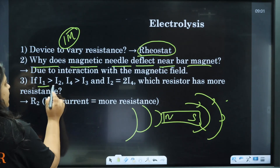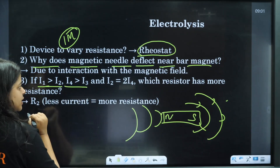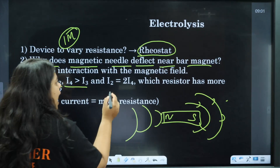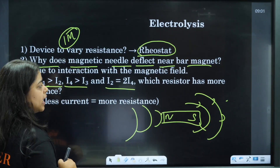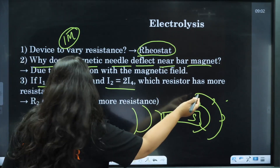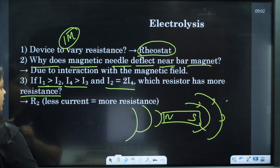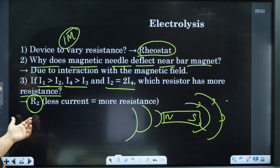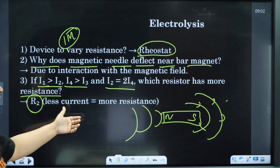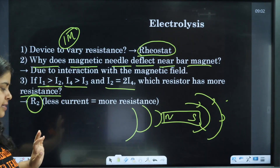How I1 is greater than I2, and I4 is greater than I3: R2 has more resistance, so it carries less current. R2 has less current and more resistance.